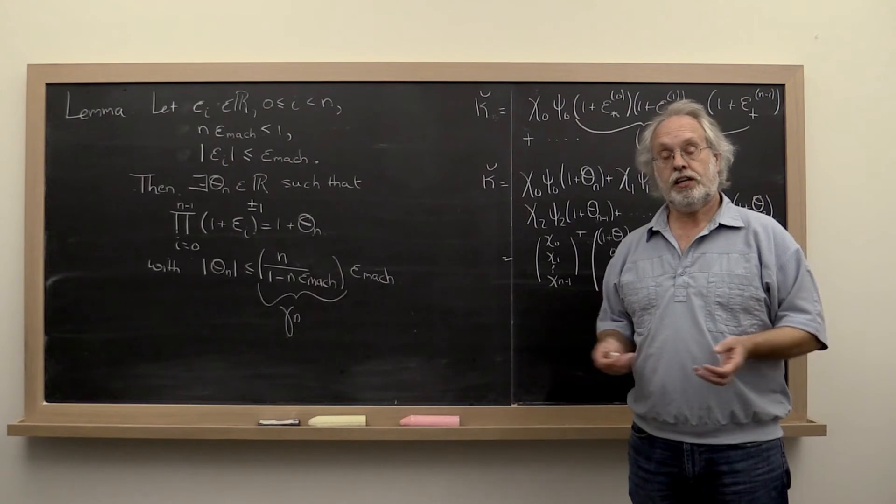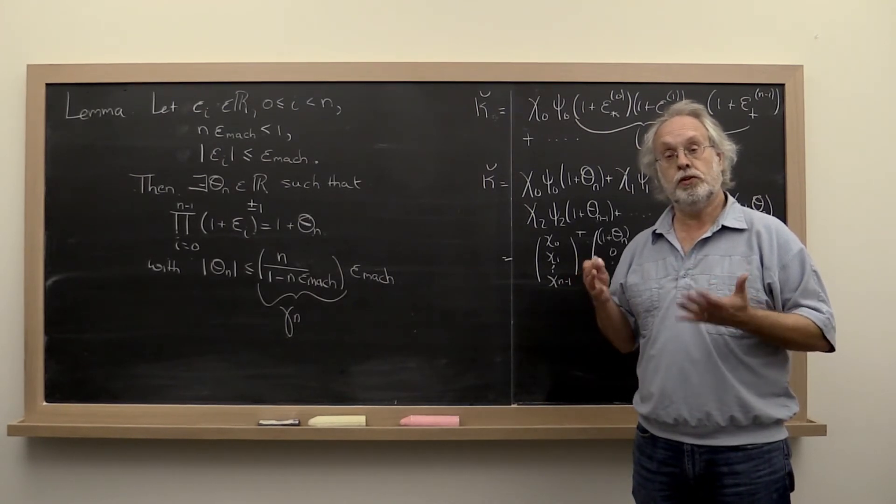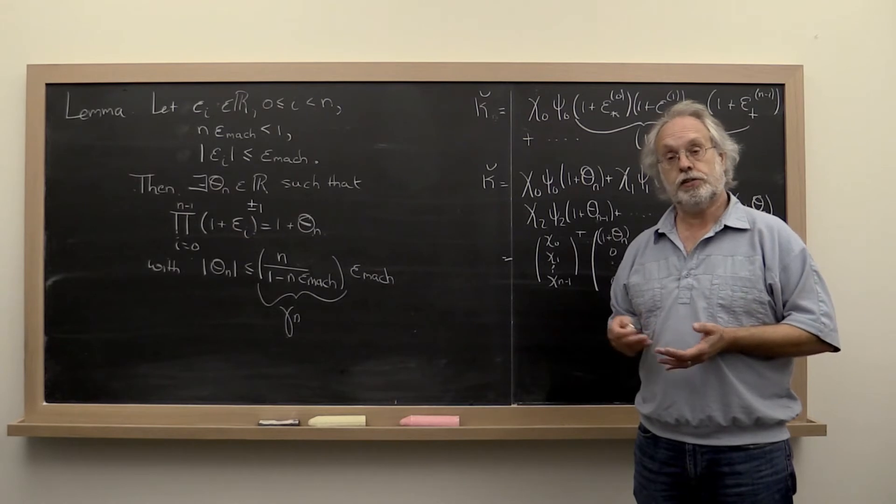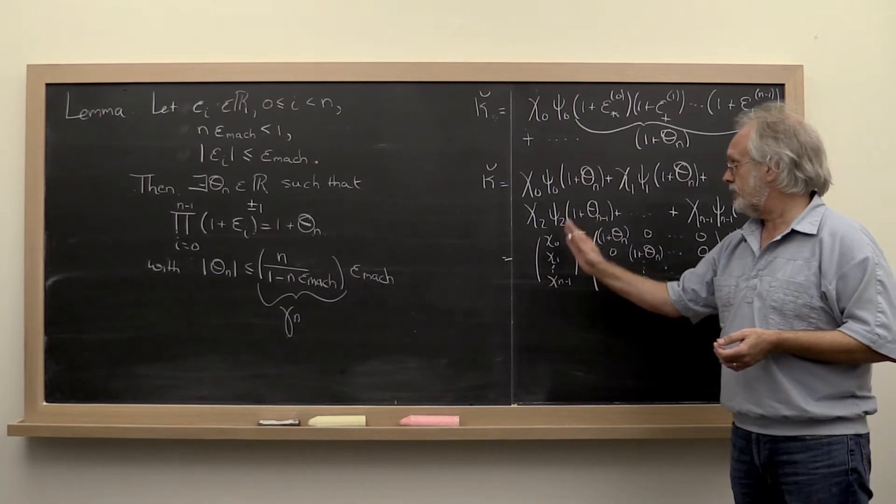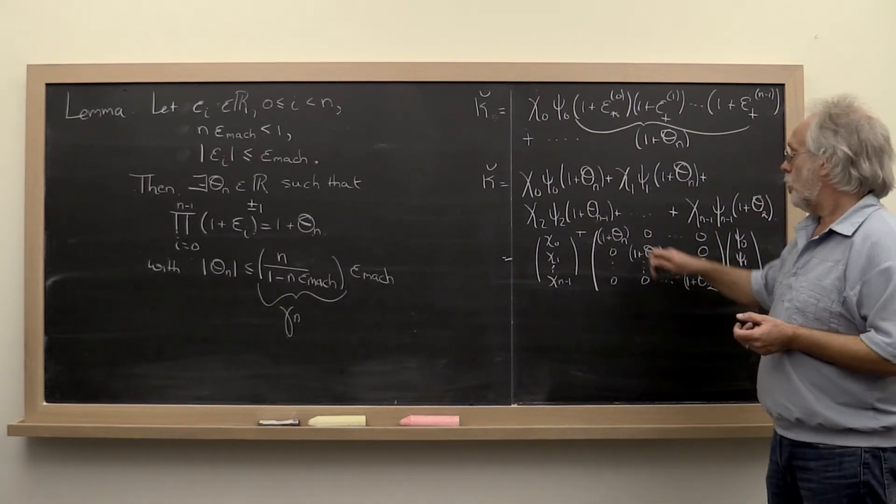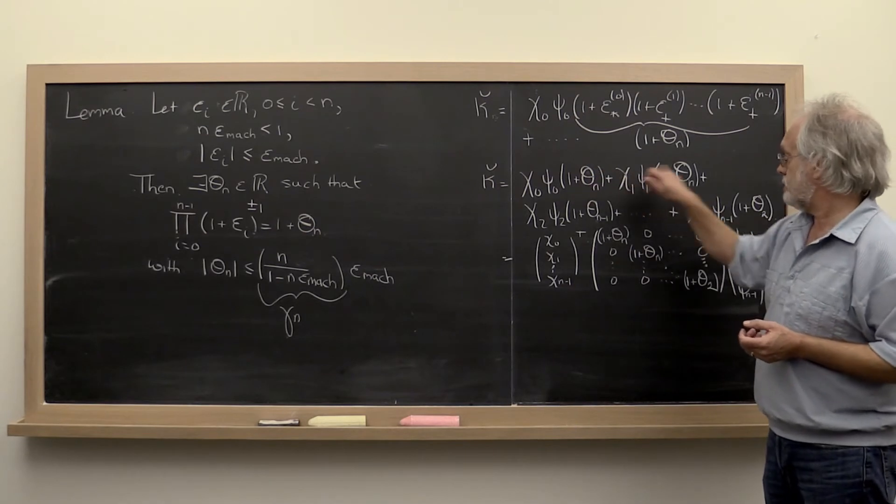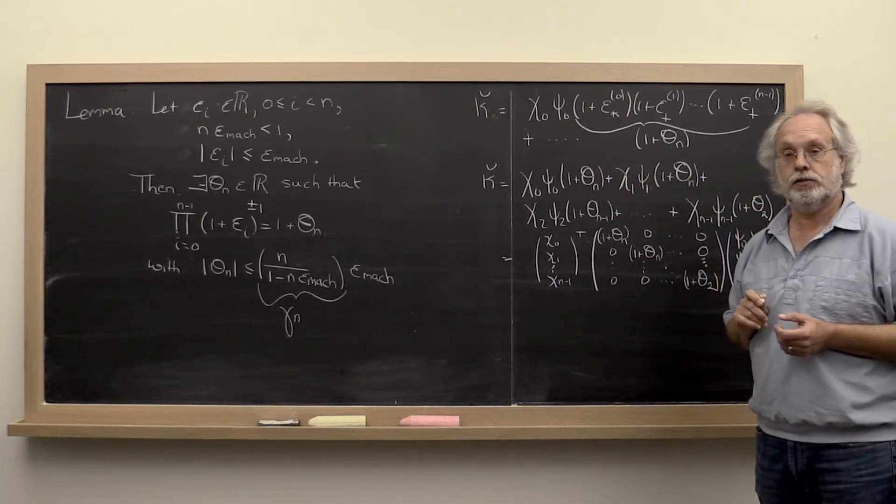And then we can pull the same trick that we did when we analyzed the error when you take the dot product of vectors of size 2 or 3 and capture everything in terms of a dot product with a diagonal matrix in the middle, where these factors that come in right here end up on the diagonal of the matrix.